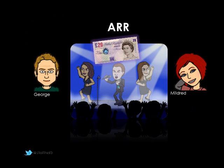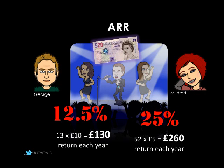This is summarised by the figures which represent the rate of return. George will actually give us about 12.5% each week — that's what £2.50 is from £20. Mildred gives us a 25% return — that's £5 out of the £20. So looking at those figures, Mildred gives us a better rate of return.